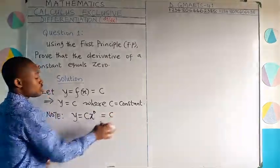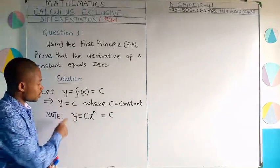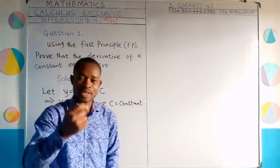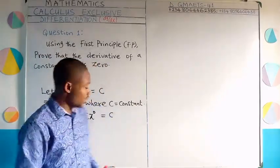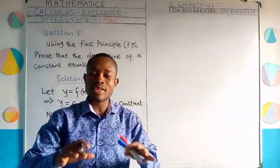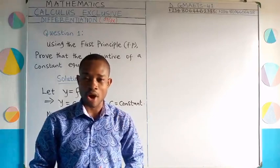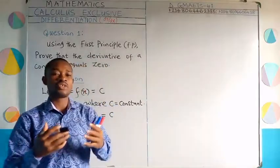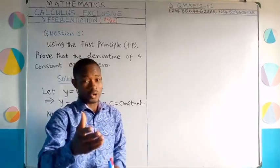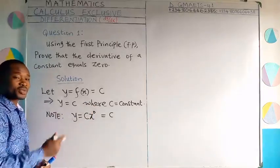This is the same as y equal to c, because x raised to the power zero equals one, and one times c still gives you c. So we are mathematically consistent and accurate — we haven't changed the question. We have succeeded in introducing x into this function, and we can now apply the first principle, although this x with power zero doesn't make much difference because at the end that x will go off.